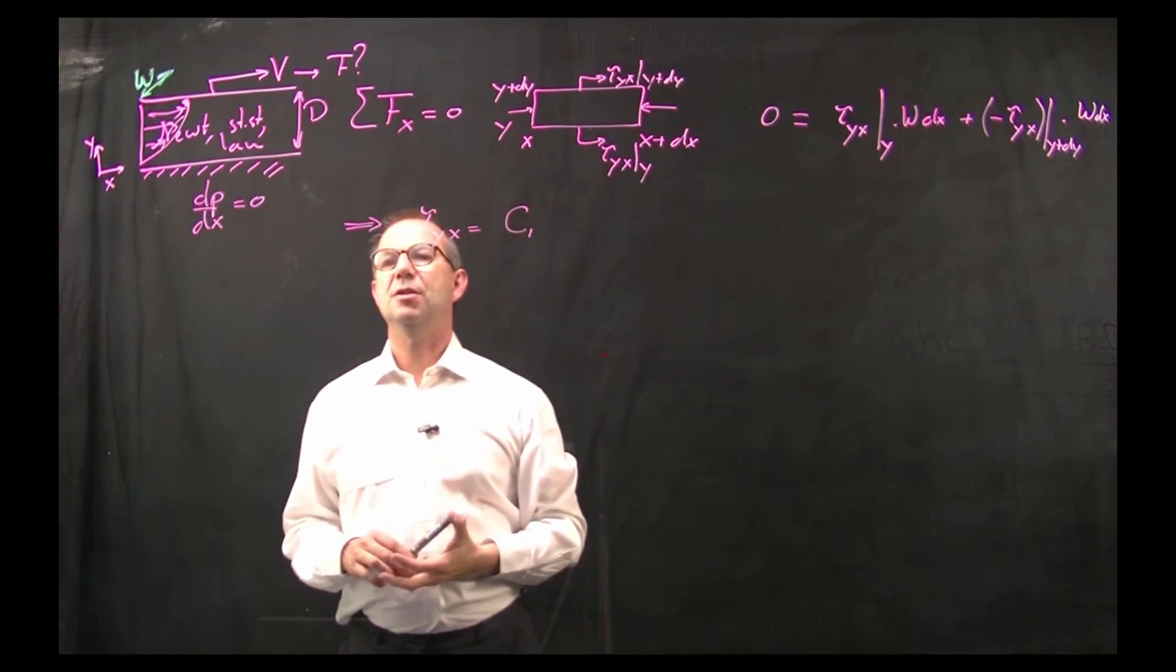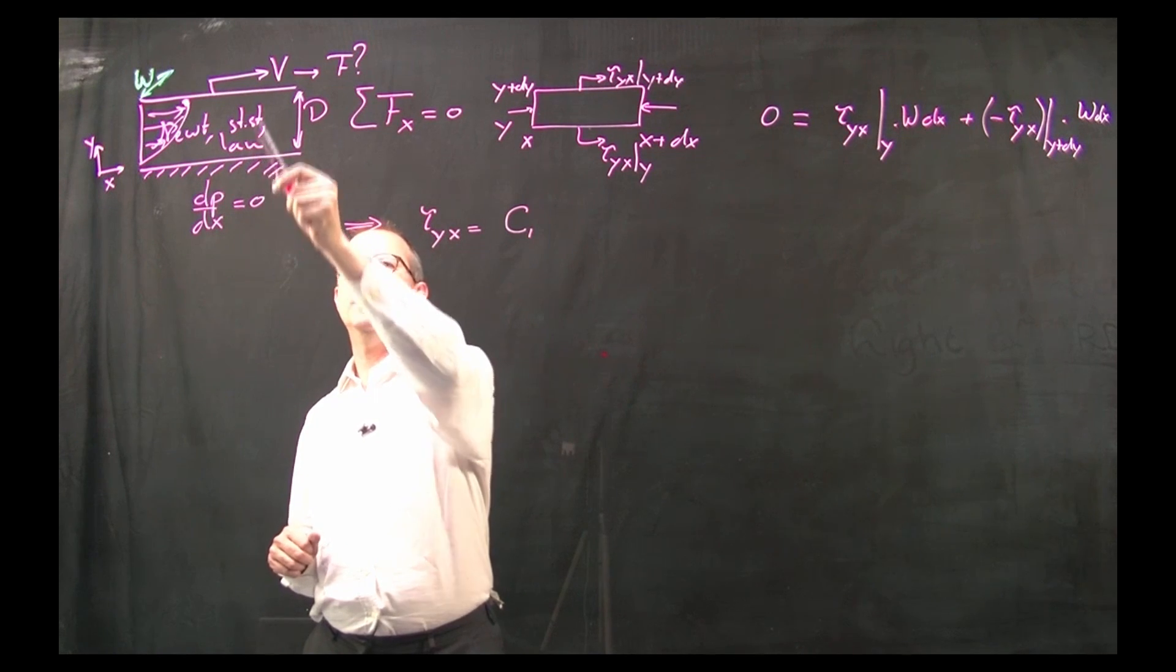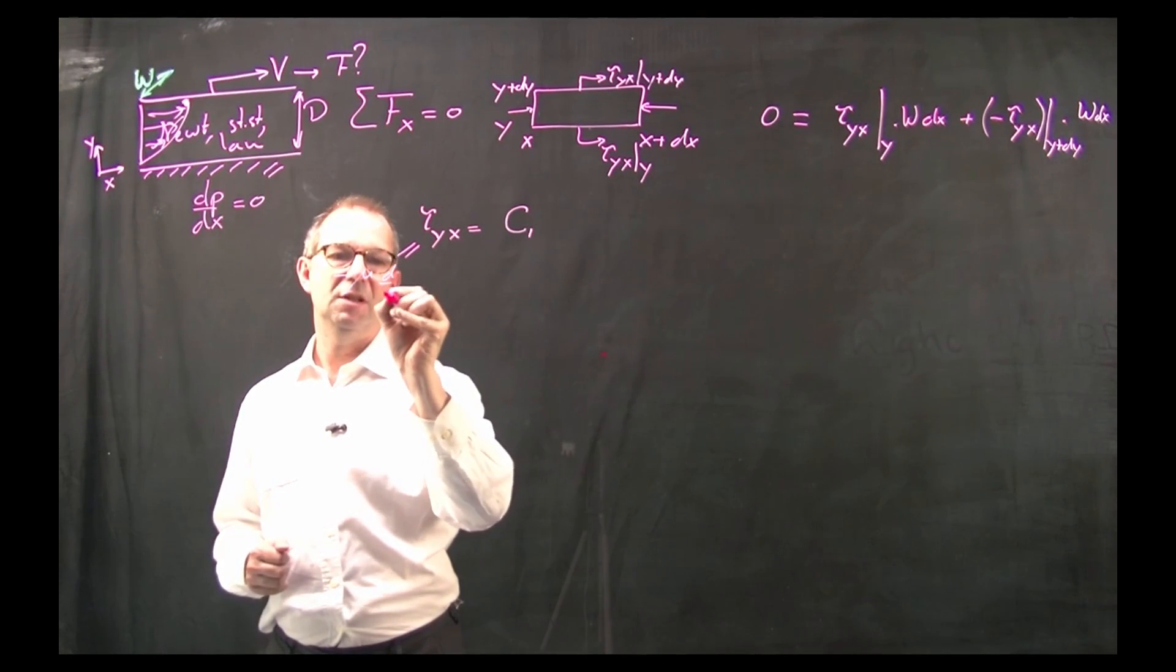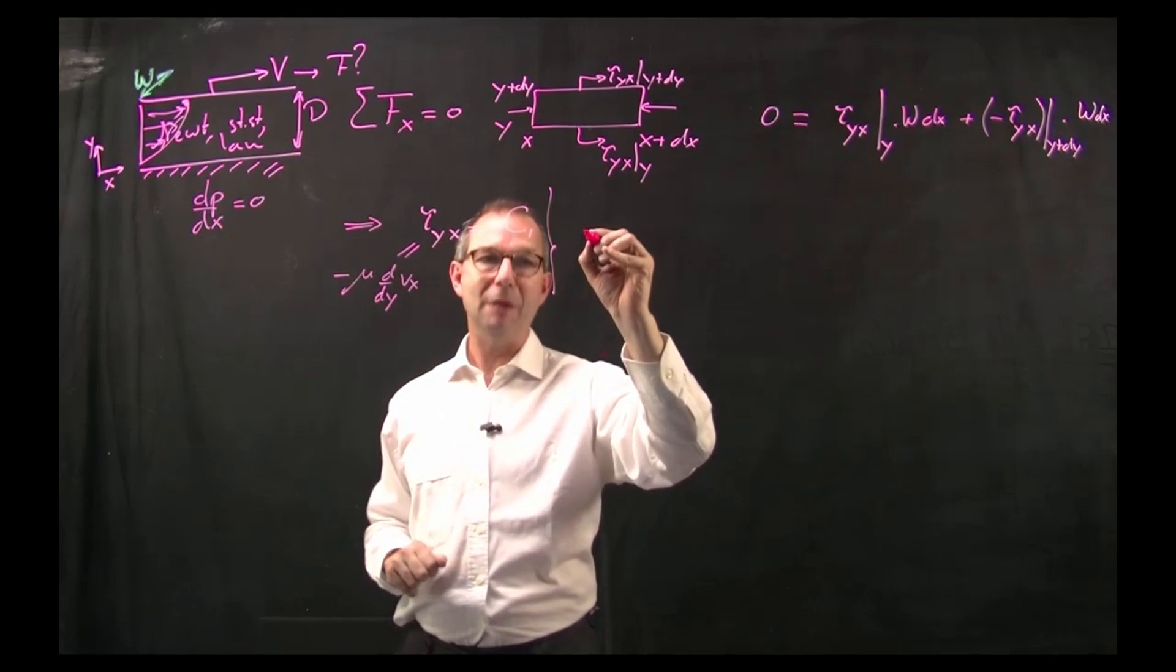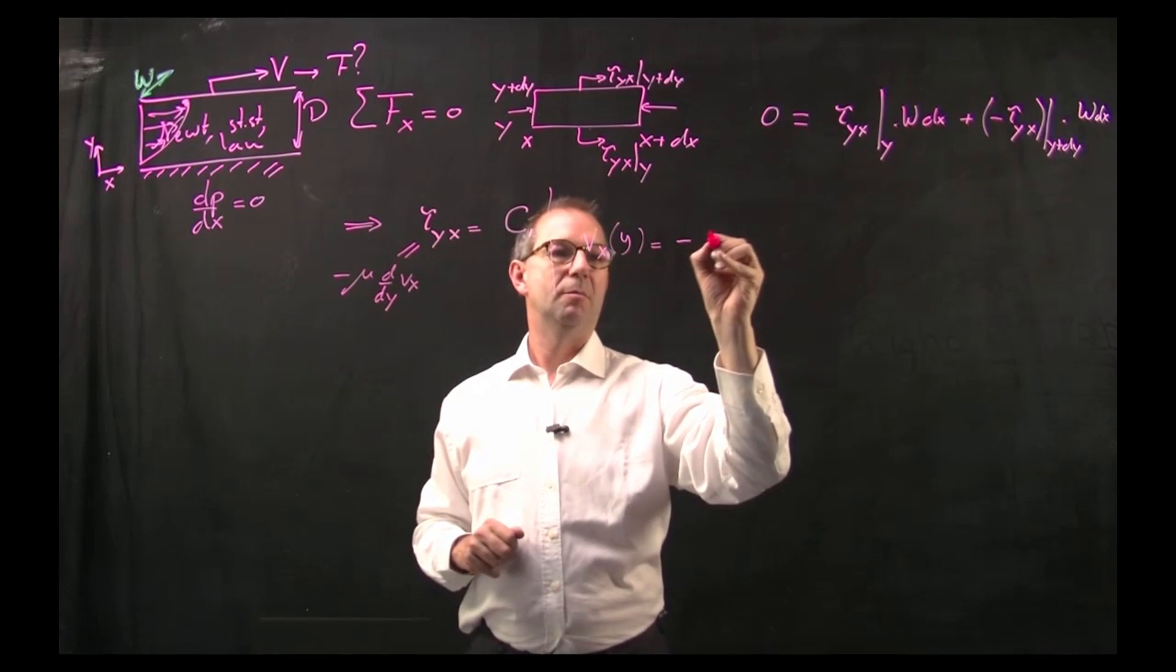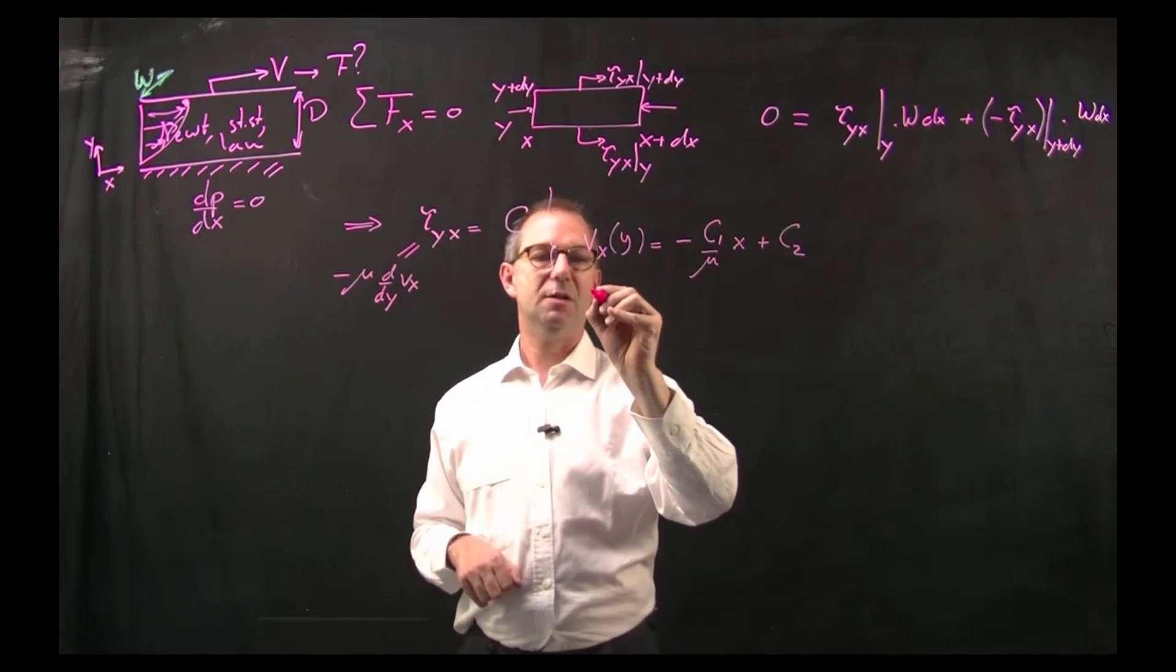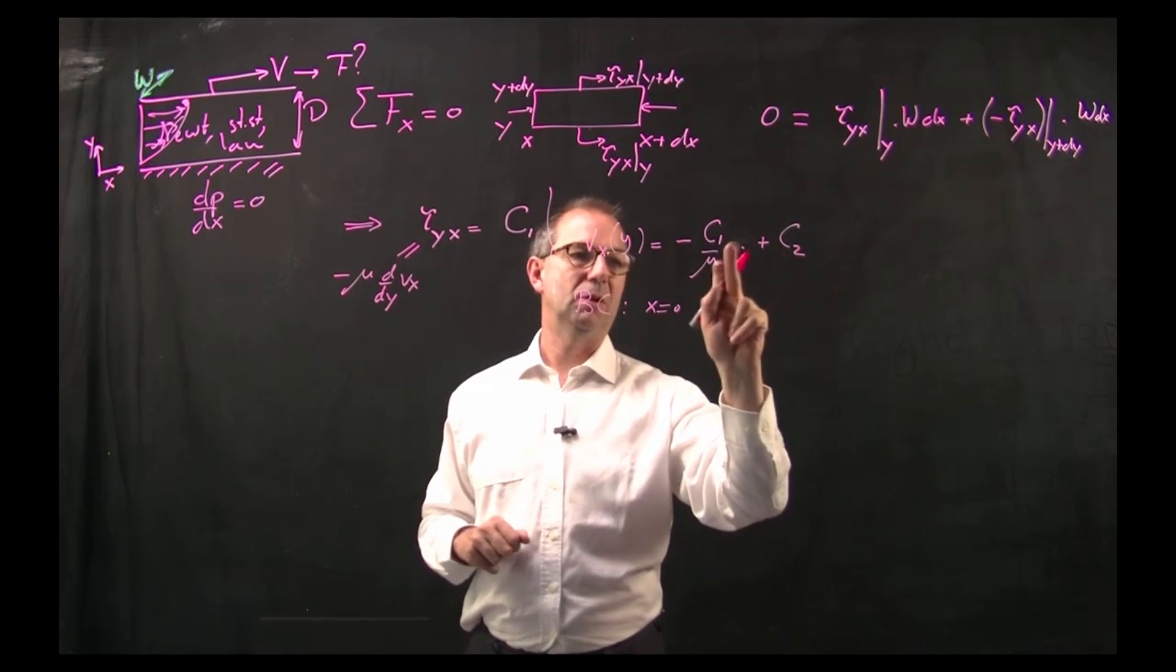Alright if it's a constant can I find it? No I have no symmetry. I have no boundary condition literally on tau. So I need to live with this coefficient and compute the velocity. Because this is also equal to minus mu d/dy of the horizontal velocity. Now I can readily solve for the velocity because on the velocity I have two boundary conditions. So vx as a function of y equals minus c1 over mu times y plus c2.